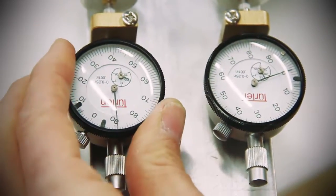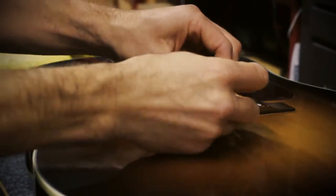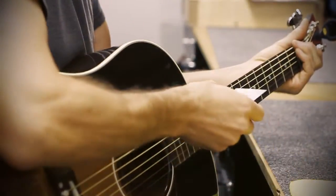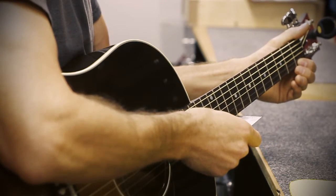The saddle is then reinstalled in the instrument and measurements taken at the 12th fret on the first and sixth strings. The amount the action is to be lowered at the 12th fret is multiplied by two and this is the amount the rods need to be moved on the corresponding sides to affect the desired change.